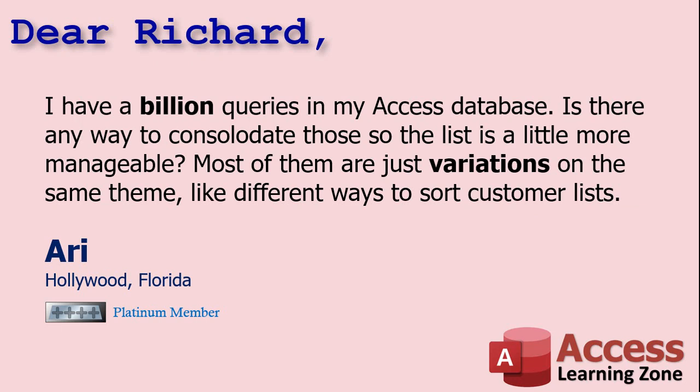Today's question comes from Ari in Hollywood, Florida, one of my Platinum members. Ari says he has a billion queries in his Access database — it's probably not a billion but he's got a lot. Is there any way to consolidate those so the list is a little more manageable? Most of them are just variations on the same theme, like different ways to sort customer lists. Well yes, Ari, there's definitely a way you can cut down on that list of queries — you're going to have to learn a little bit of SQL.